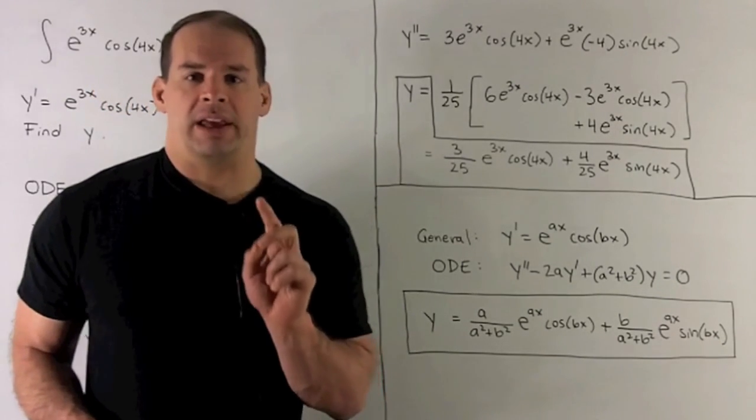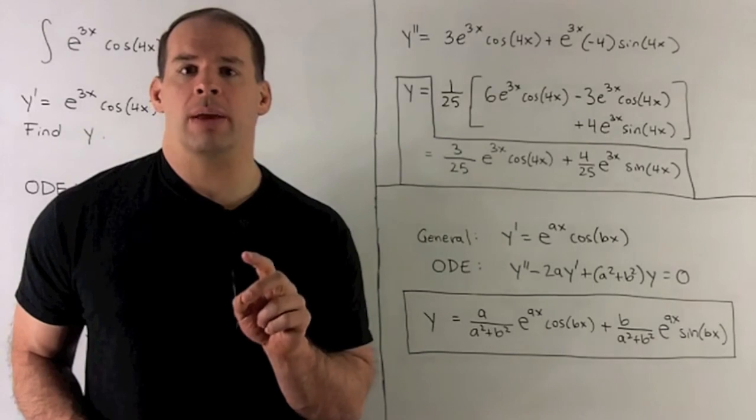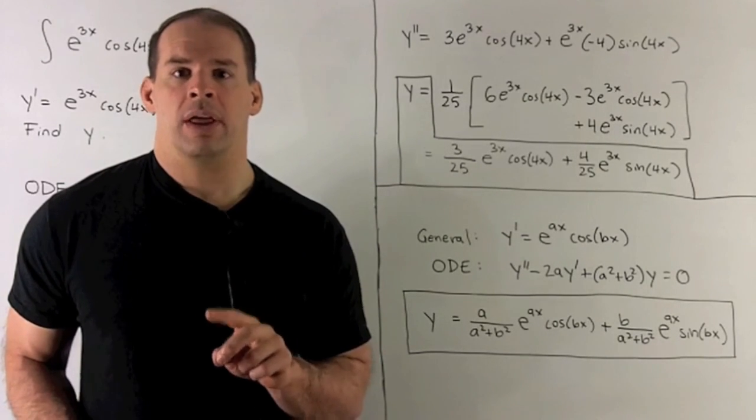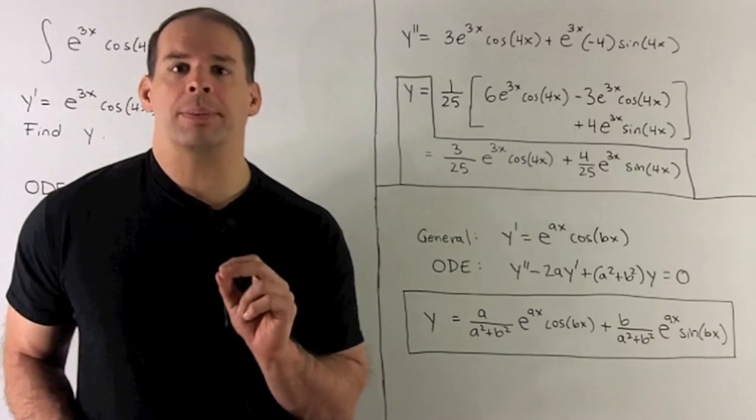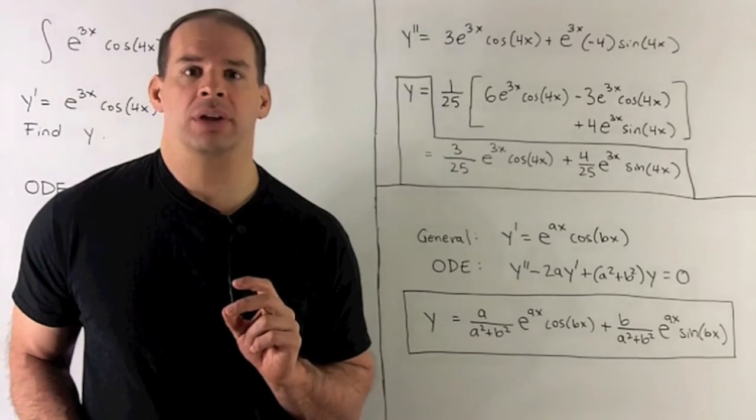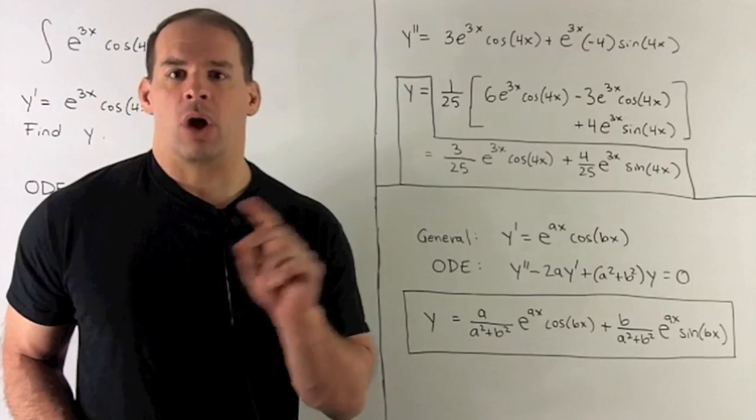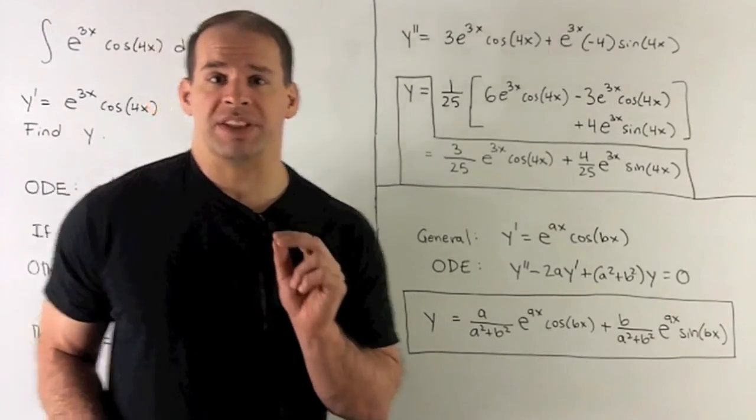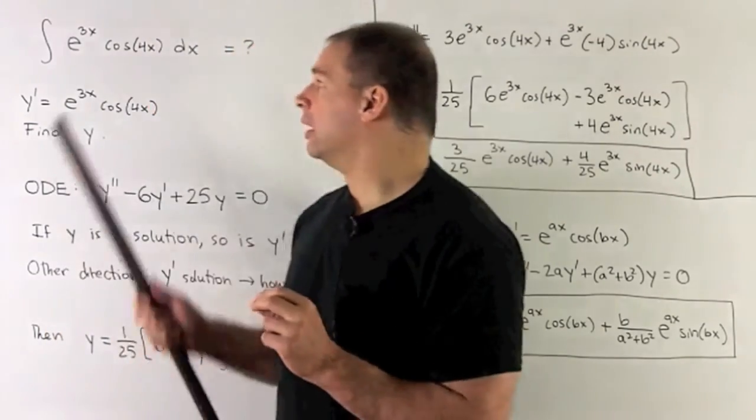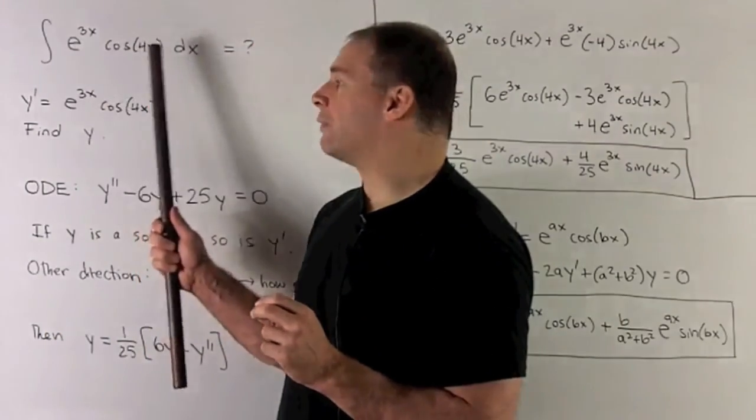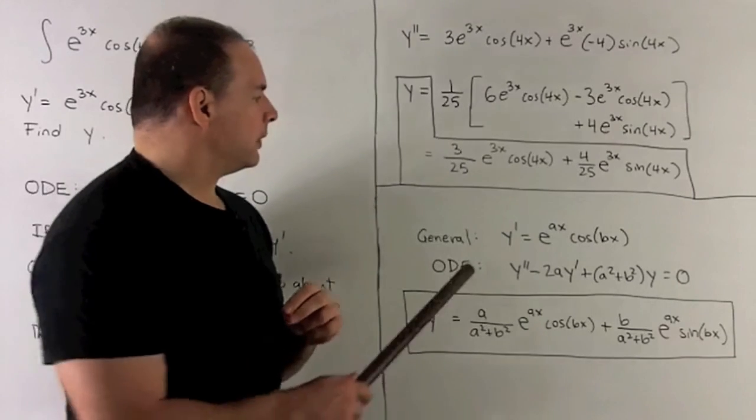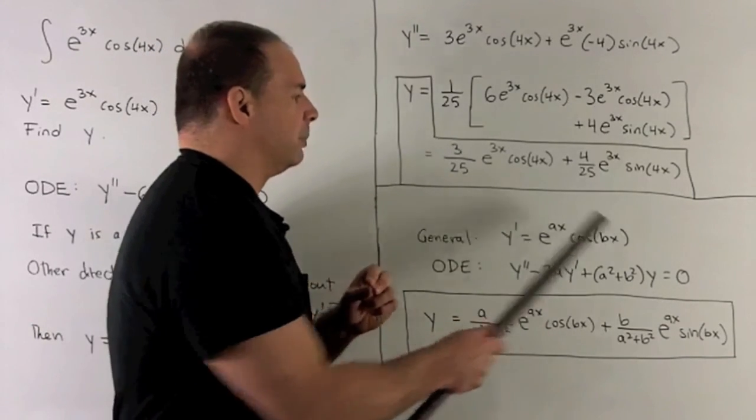Okay, so the idea here is not to focus on the formula, but focus on the technique. That way, if it comes up, you can reconstruct from scratch. Also note, for all of this, the procedure will be the same for getting the solution to either e to the 3x sine 4x or e to the ax sine of bx.